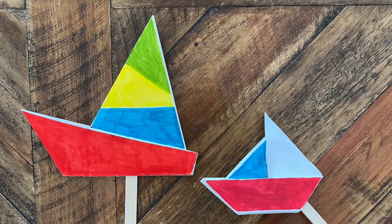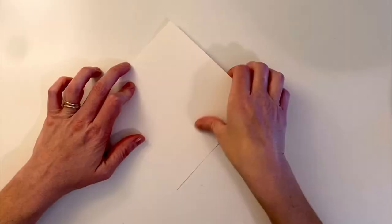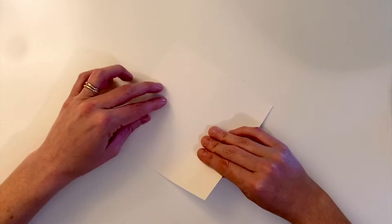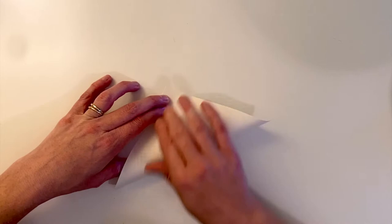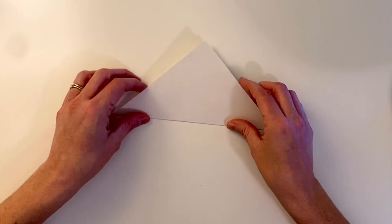Now we're going to make this sailboat. This one starts off the same way as the first one. The first fold is to fold it in half corner to corner like this. Again, make sure you really press along the seam. Open it up.